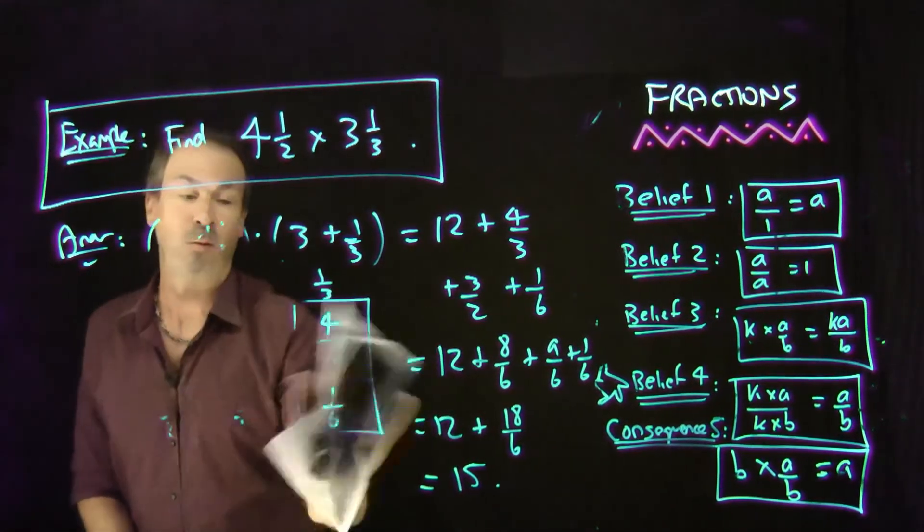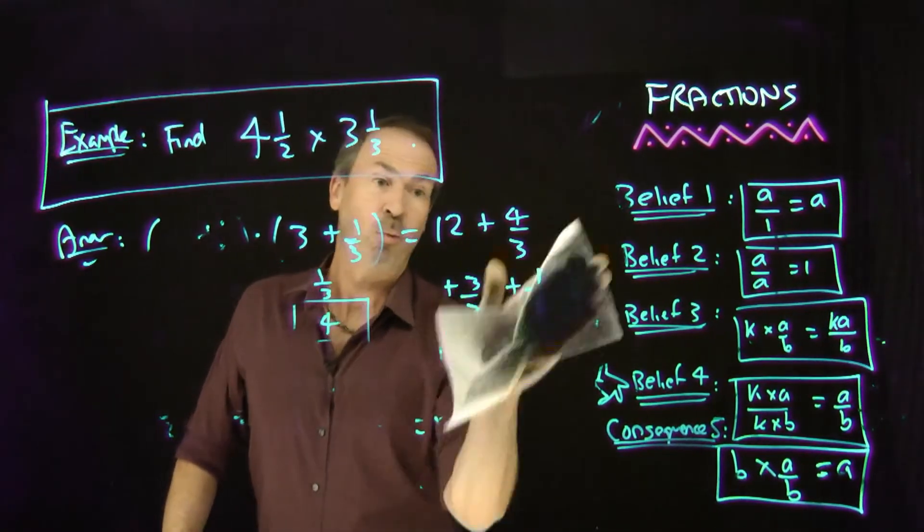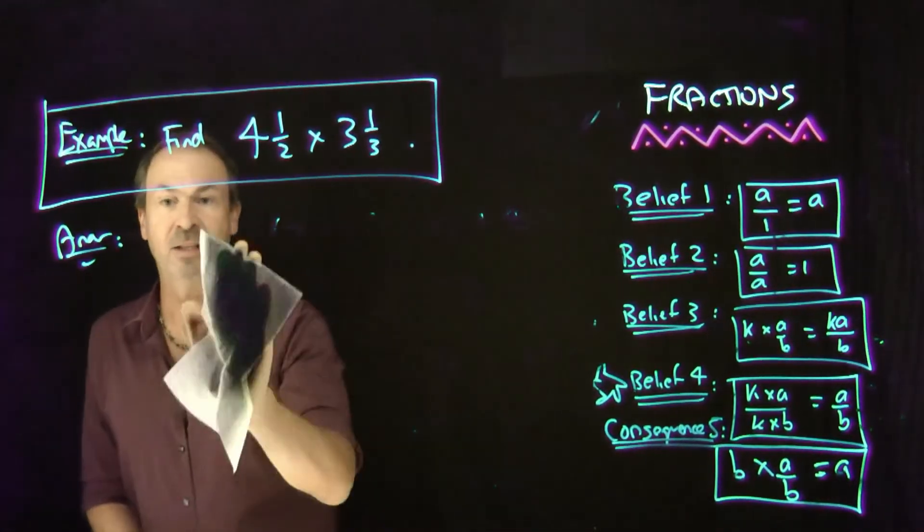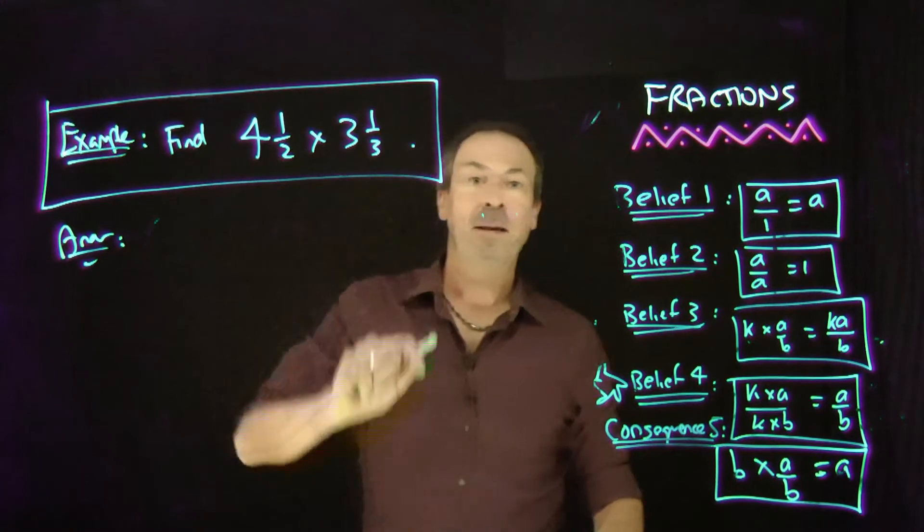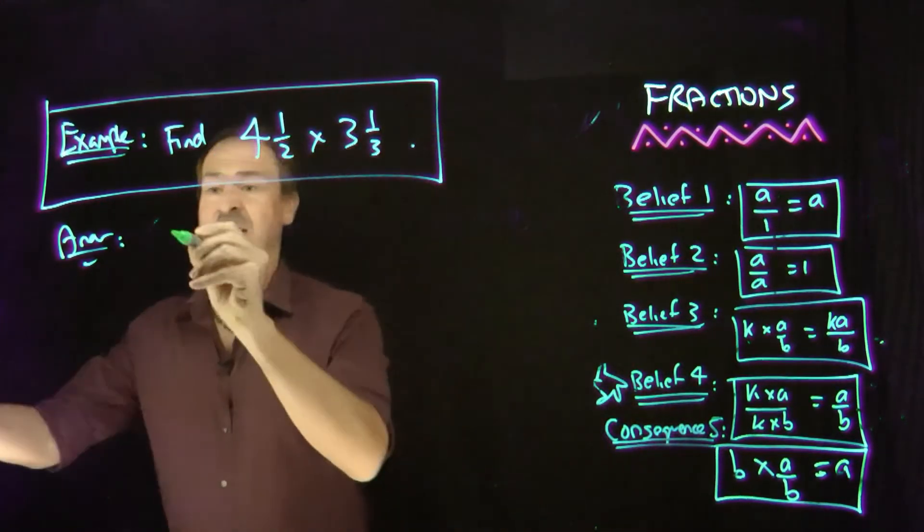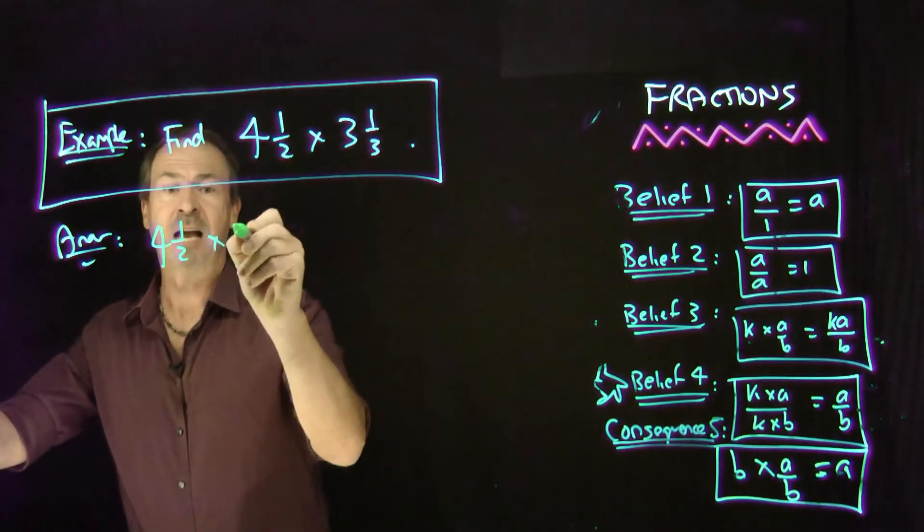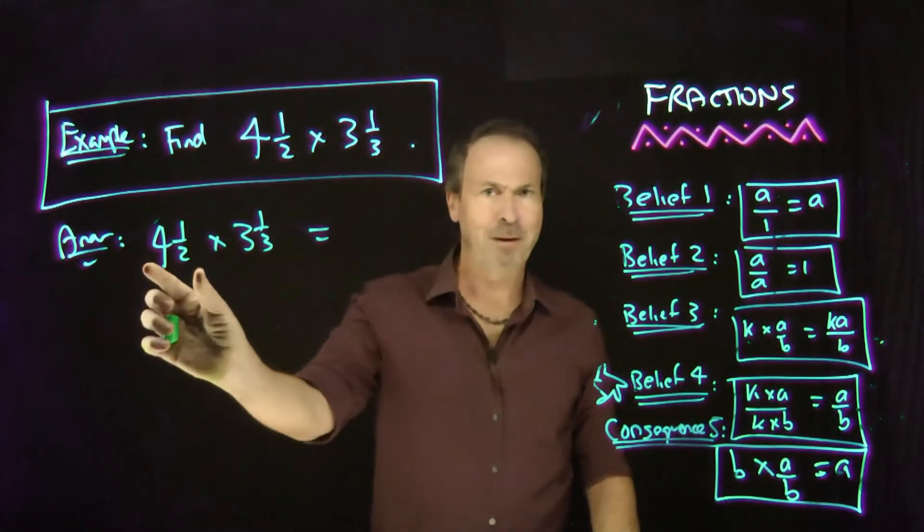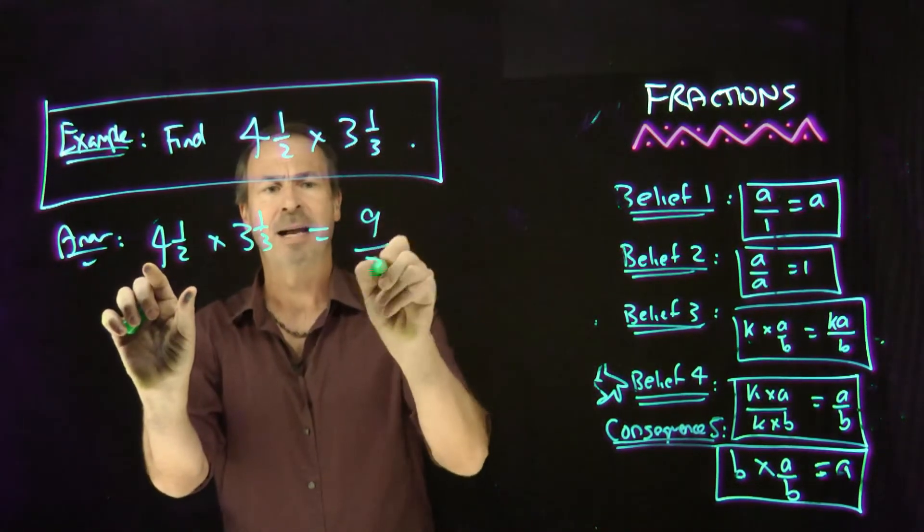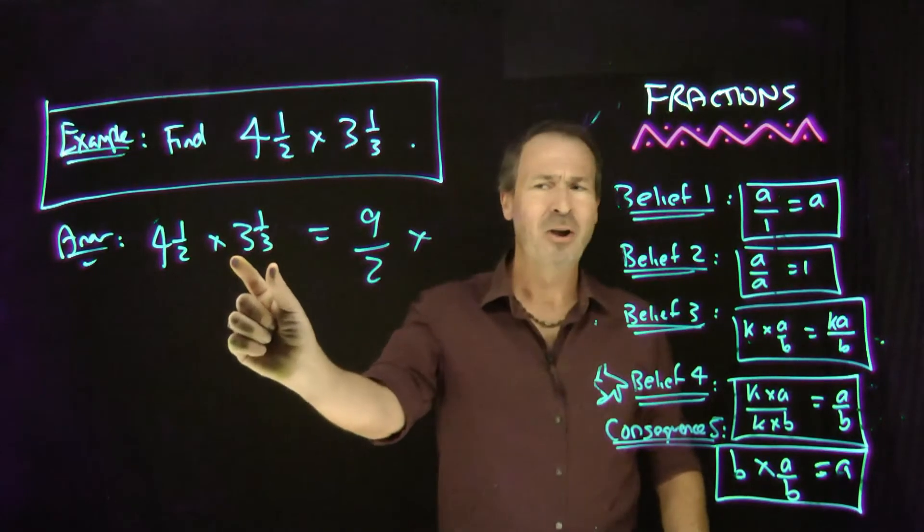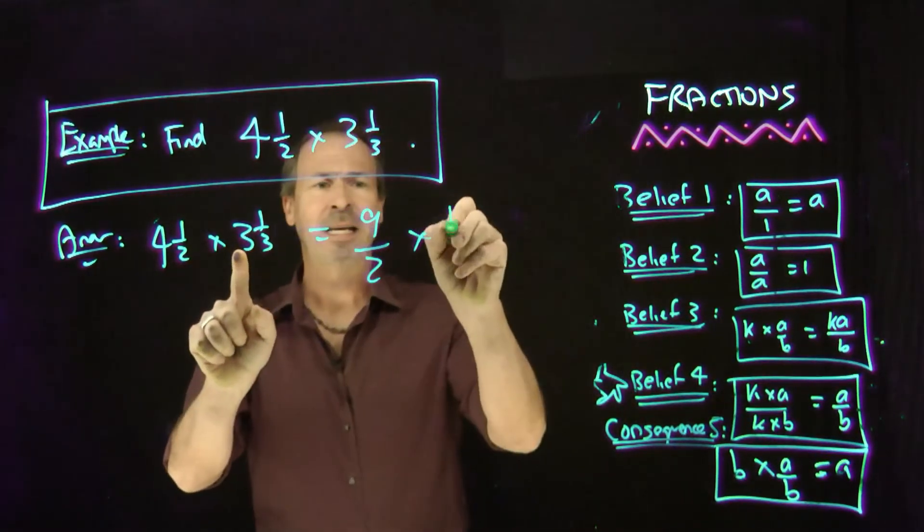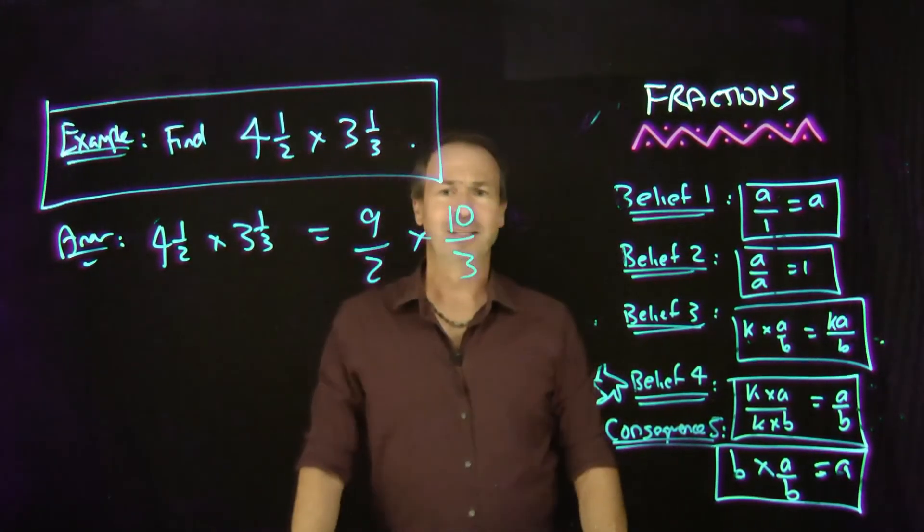Though, I should point out that some people might like to do these sorts of problems this way instead. It's a second way to think this through. I'll rewrite these mixed numbers as improper fractions. For example, 4 and a half times 3 and a third. I don't know if you can see it, but spend a moment. That's really 9 halves. And 3 and a third, I don't know if you can really see it right now, but that's actually really 10 thirds.